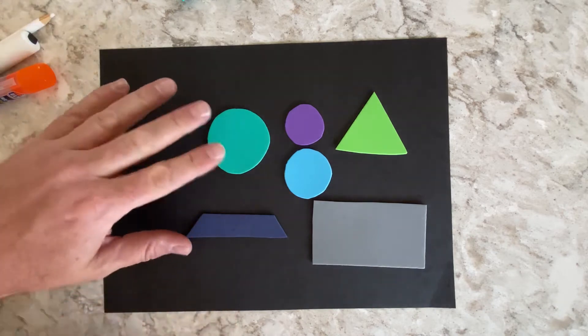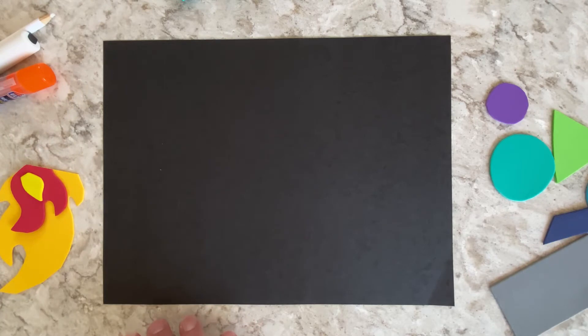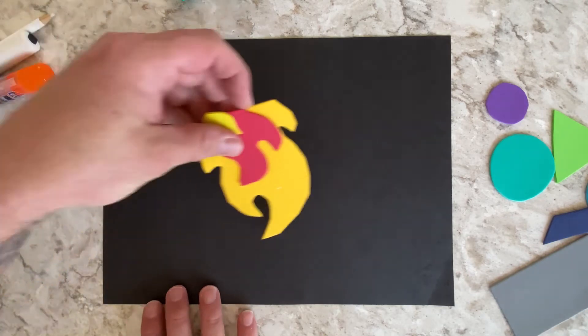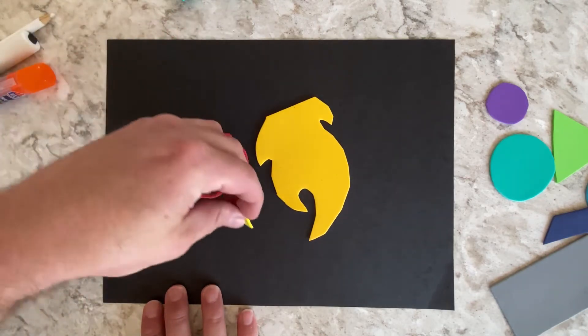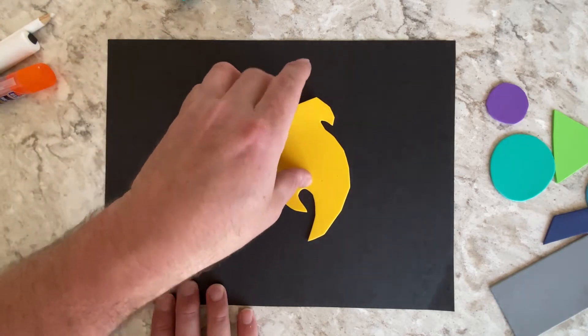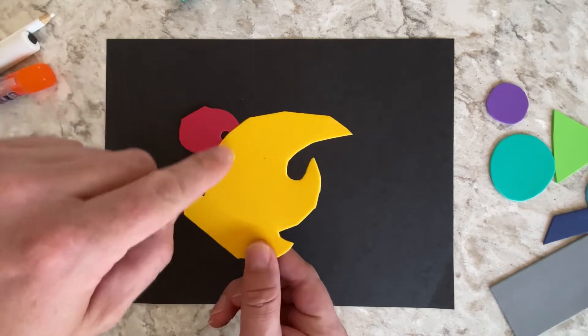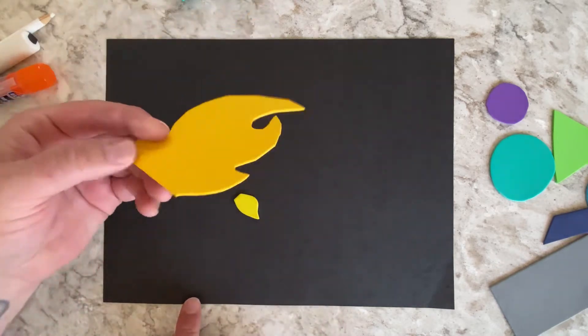The second type of shape that we use in art is called an organic shape. Organic shapes are shapes that are not defined. They don't have a name to them and these are usually found in nature. If you look at these pieces right here, they are kind of wild. They go all over the place. There's not a name for this necessarily.